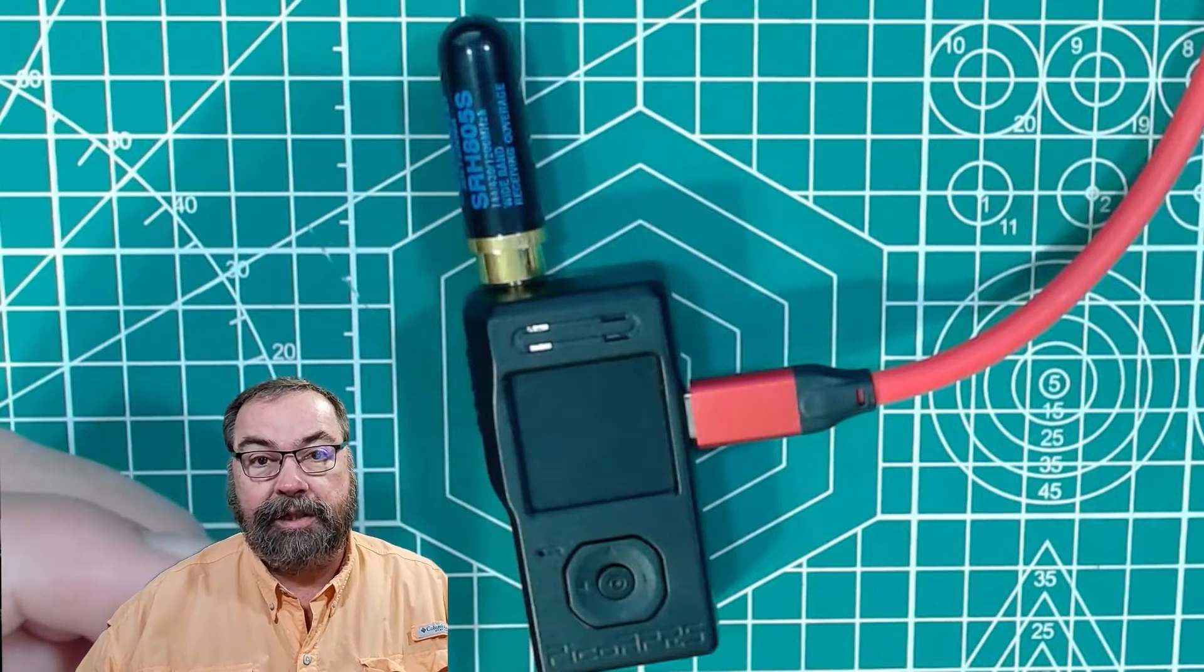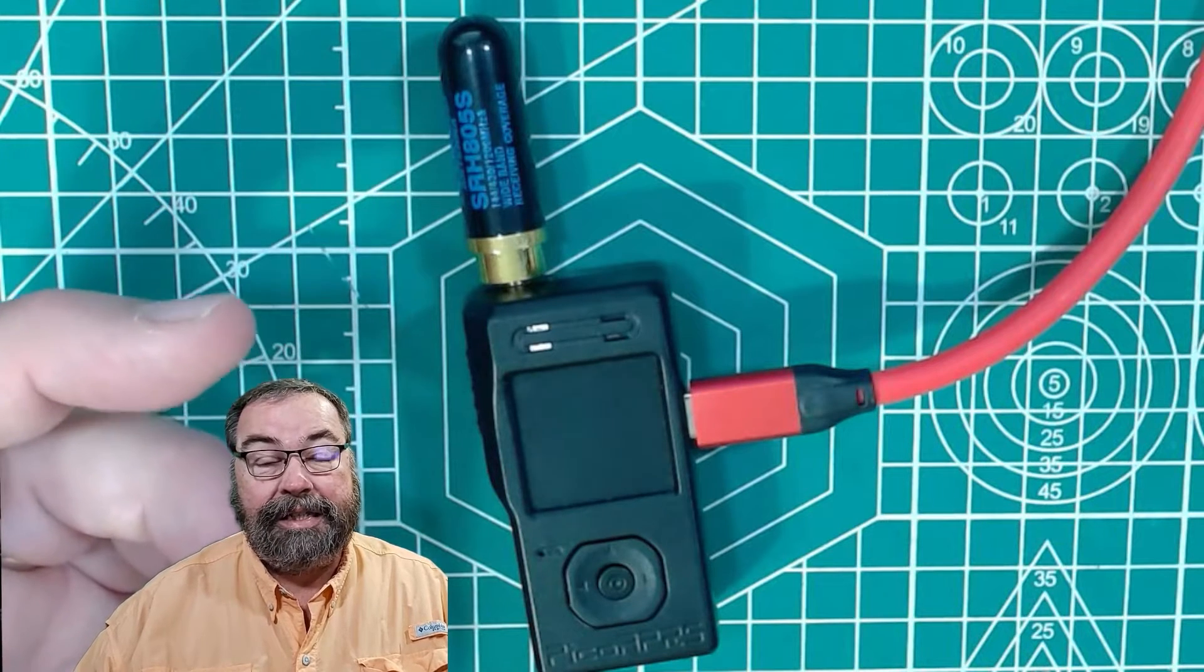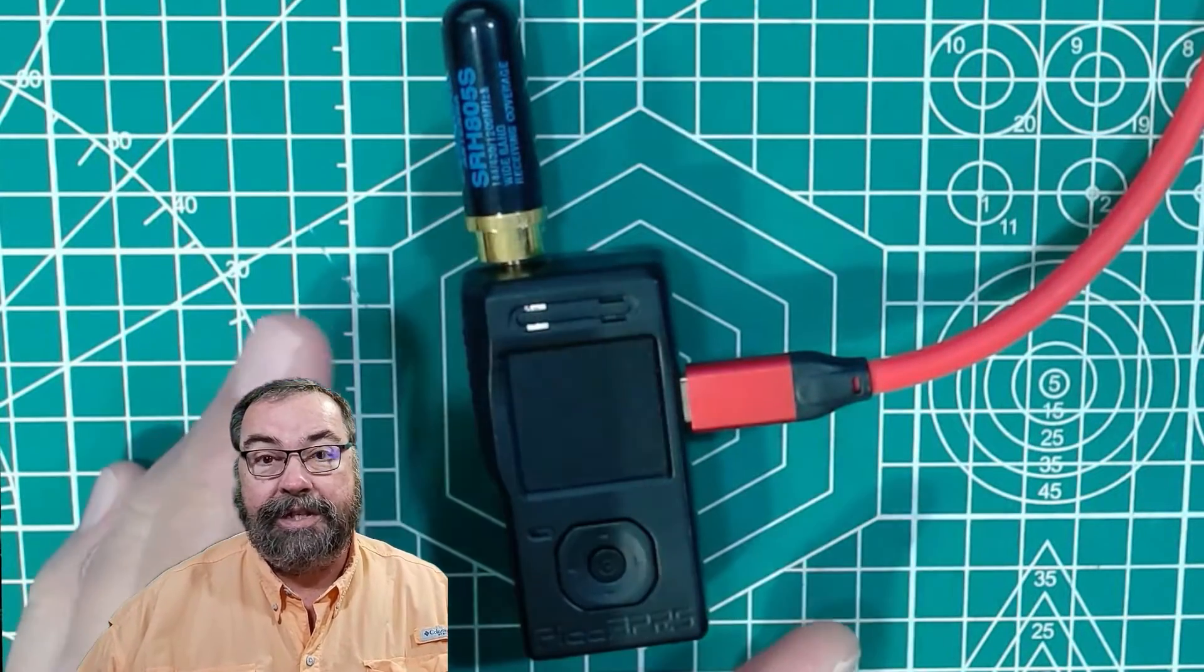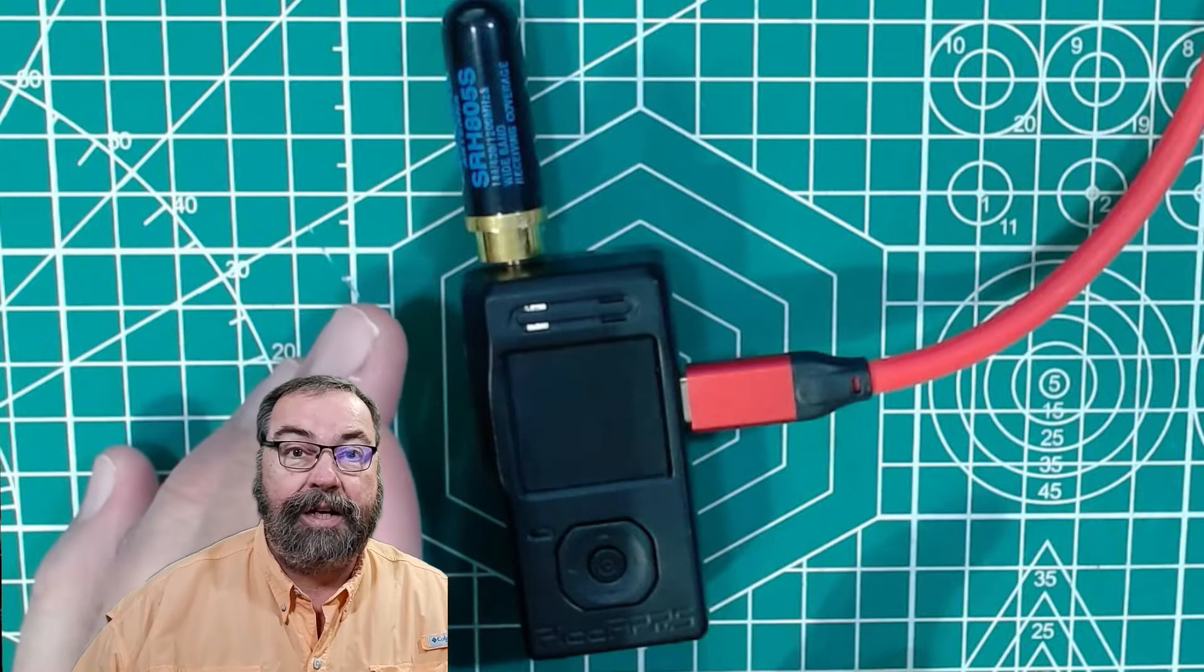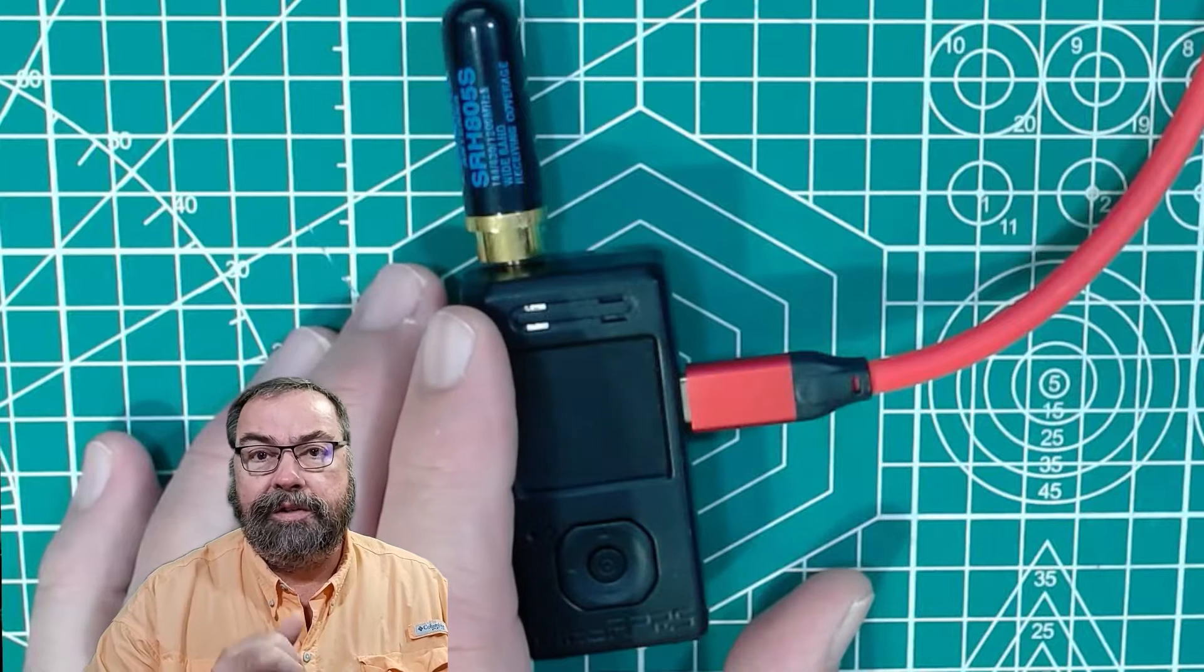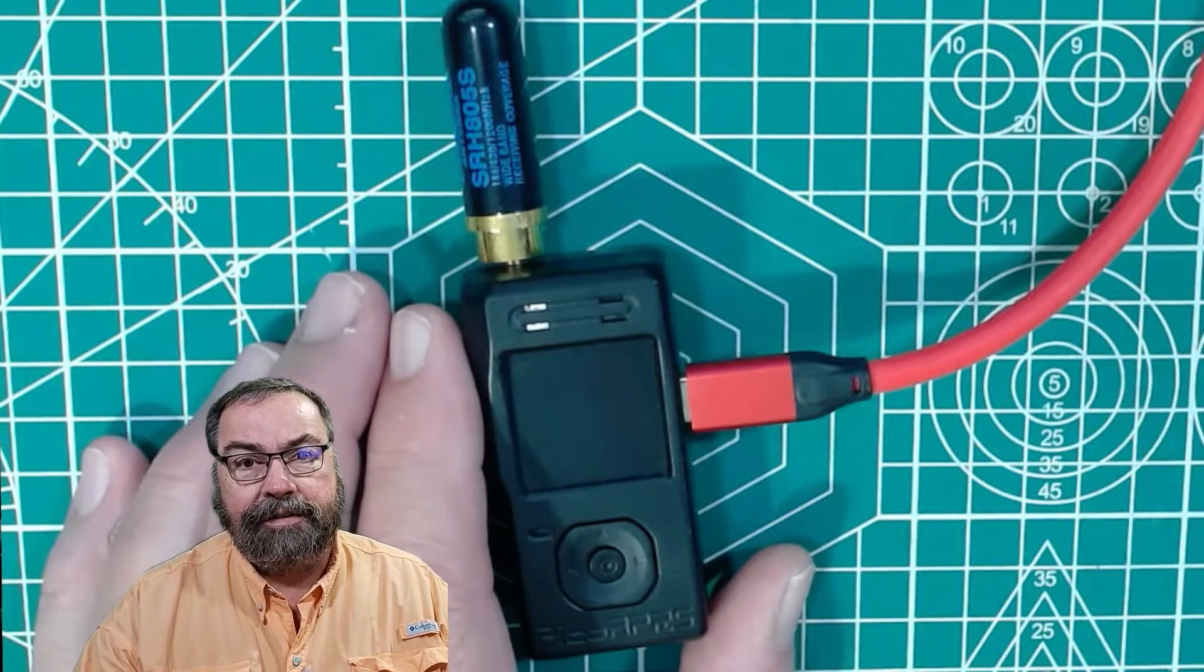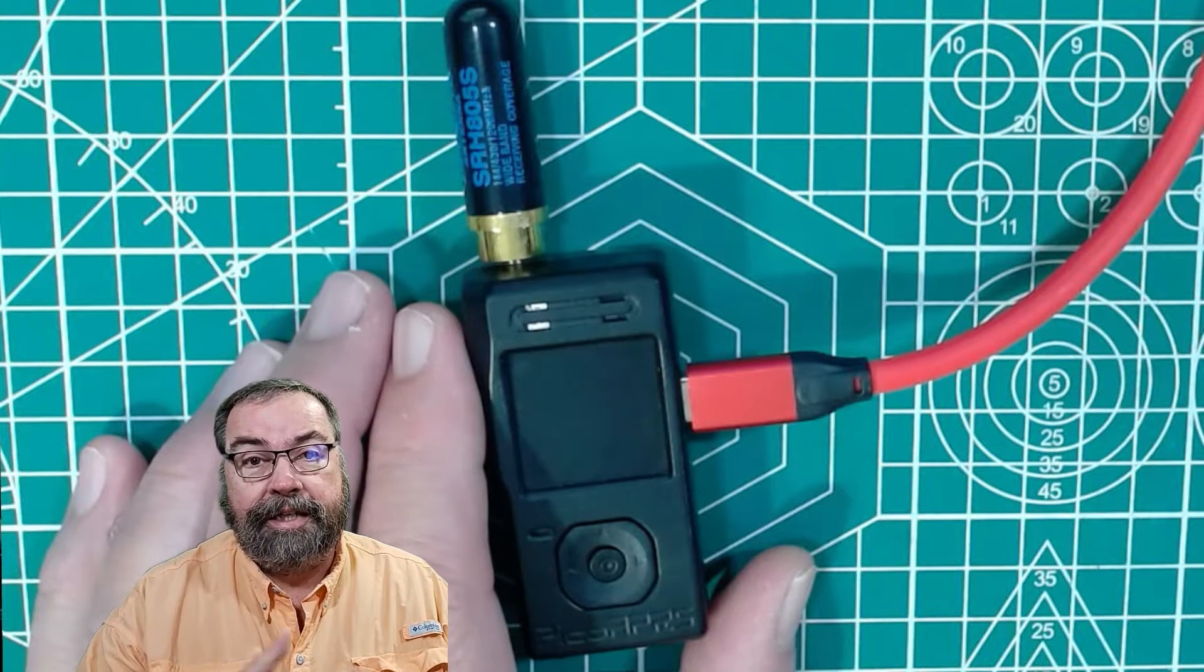It is a receive only iGate, number one. Number two, it's a DigiPeter. Number three, it is a TNC, a KISS TNC, and you can use it through USB, Bluetooth, or Wi-Fi for the TNC function. So you could use it with an app on a mobile device like APRS.fi on an iPhone and use this as your TNC. You can update it over Wi-Fi and it has Bluetooth.